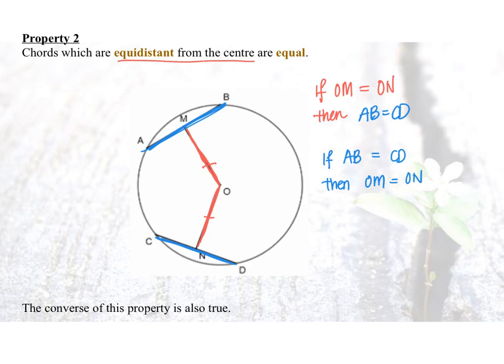Property number 2: chords which are equal distance from the circle center are equal. So if ON is equal to OM, then AB will be equal to CD. If AB equals to CD, then OM will be equal to ON.